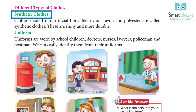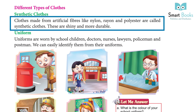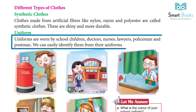Different types of clothes. Synthetic clothes: clothes made from artificial fibers like nylon, rayon, and polyester are called synthetic clothes. These are shiny and more durable. Uniforms are worn by school children, doctors, nurses, lawyers, policemen, and postmen.